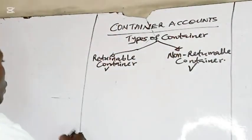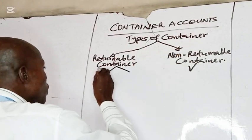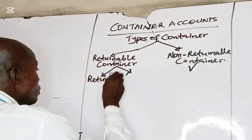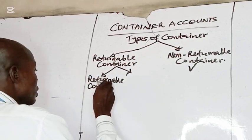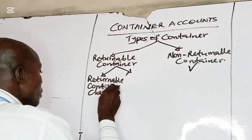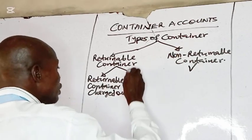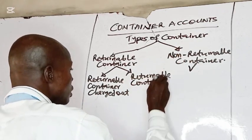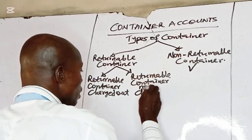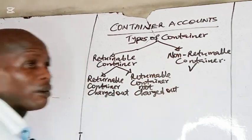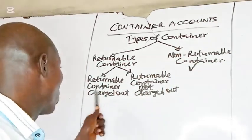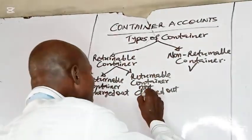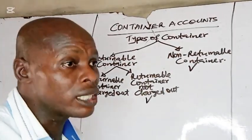Returnable containers will be categorized into two. We have returnable containers charged out, and returnable containers not charged out. I will be starting with returnable containers not charged out.